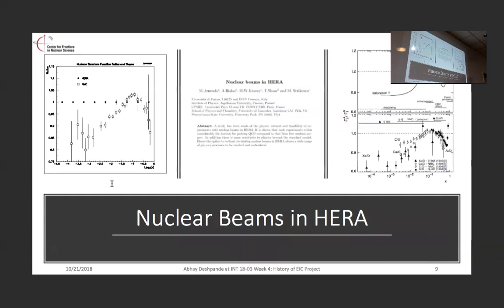At the same time, Arneodo, Bialas, Witek Krasny, Terry Sloan, and Mark Strikman were leading activities for the nuclear beam program, in parallel with the spin program I just described. These were very natural extrapolations going into the low-x region for ratios of nuclei and structure functions, to understand what happens to the EMC plot in the extremely low-x region. That's how it was simplistically but importantly presented.